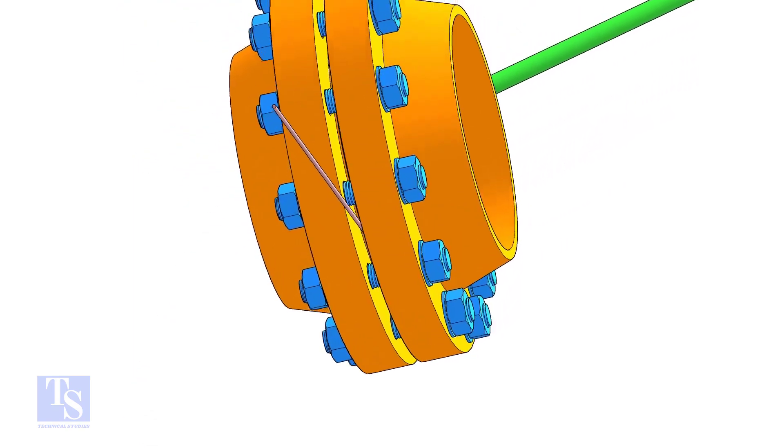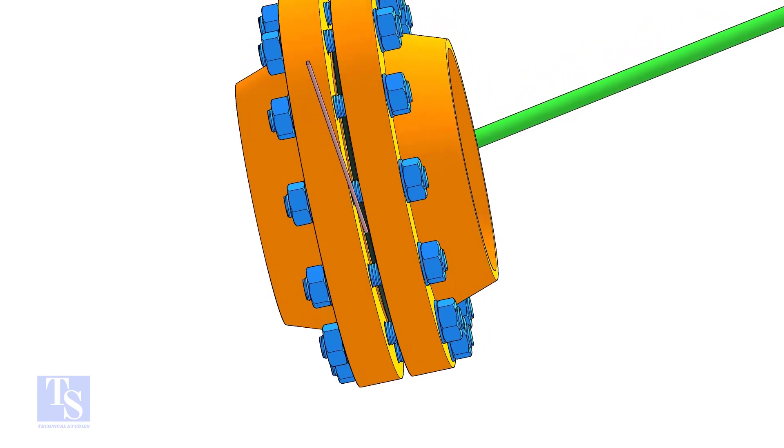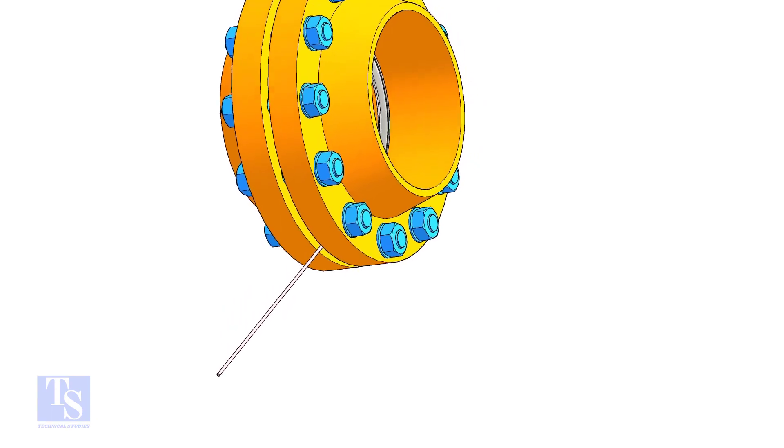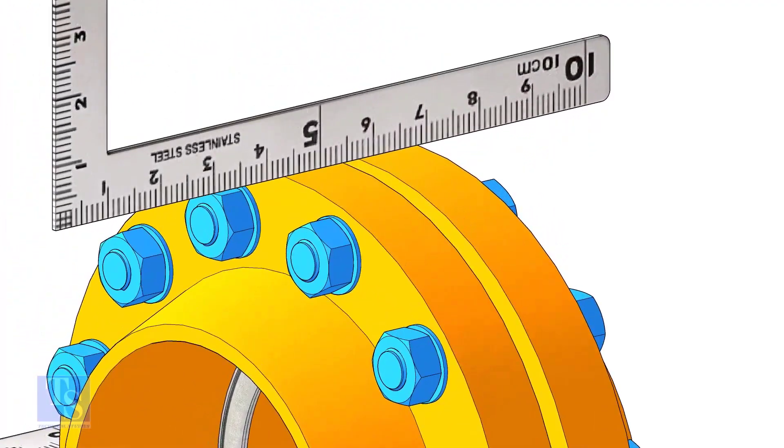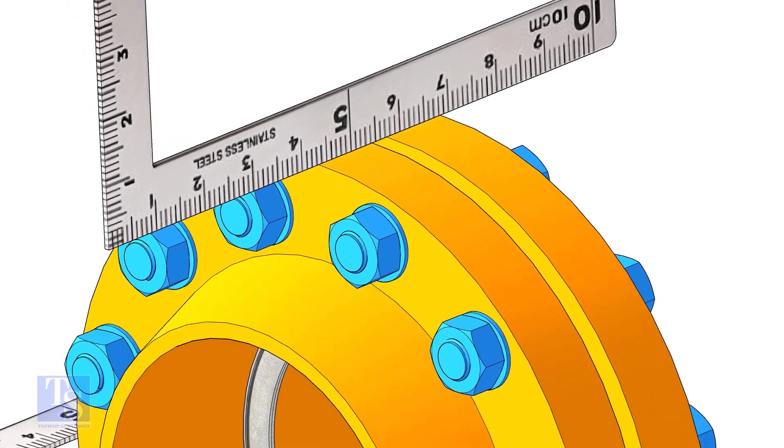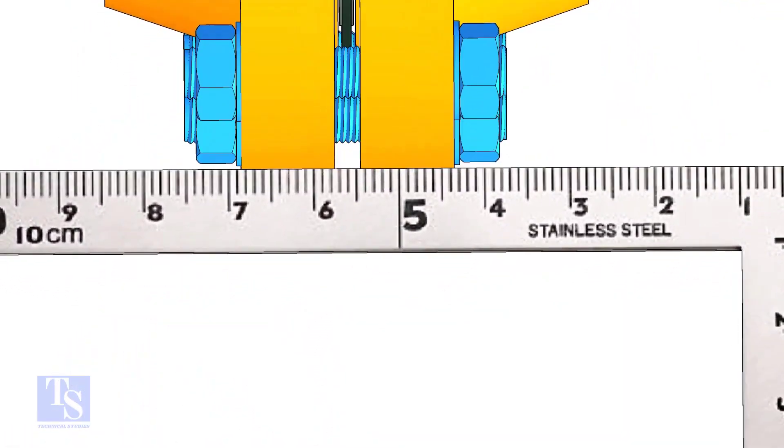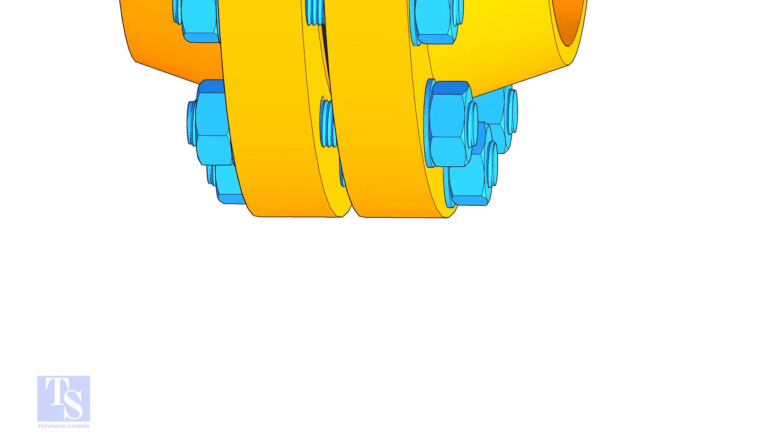Now tighten the bolts only enough to hold the gasket in its correct location. Check the flange overlap minimum at four quarters in case there is an overlap. Distribute equally to all sides.